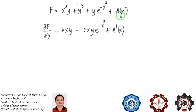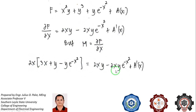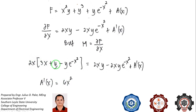We differentiate f with respect to x. Since y is constant, the derivative of x squared y is 2xy. The derivative of y e to the negative x squared gives us a term involving e to the negative x squared, plus the derivative of a of x, which is a prime of x. Since M is also the partial derivative of f with respect to x, we equate this expression to M. Distributing, 2x times 3x gives 6x squared, and we have 2xy, which cancels with the 2xy from the derivative.